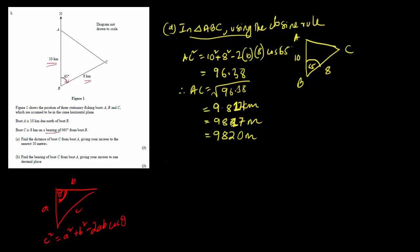In question B, we have to find the bearing of C from A. The bearing is measured from north in the clockwise direction. We cannot directly find that angle, but we can find the interior angle at A in the triangle, and then use geometry — subtracting it from 180 degrees — to determine the bearing.